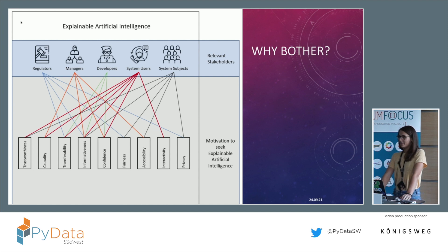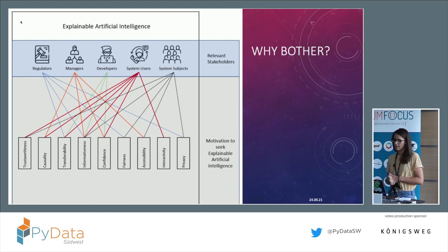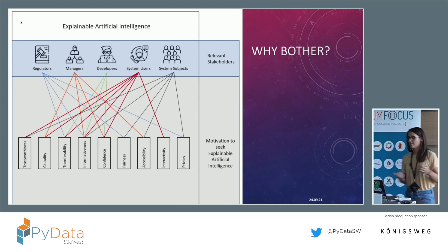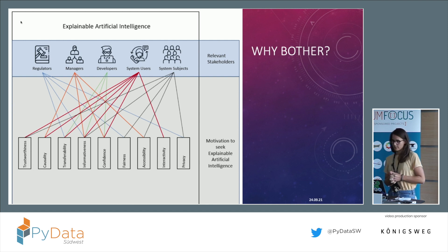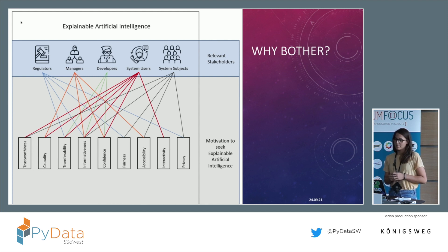And why is explainability even important? A lot of stakeholders in the AI process are interested in explainability. It's not only good for the end user — they might ask more questions about it — but also for you as a developer or stakeholder, to understand what is happening inside your black box. Explainability is also closely connected to AI ethics, which may be more interesting to regulators, but that could be a whole talk on its own.